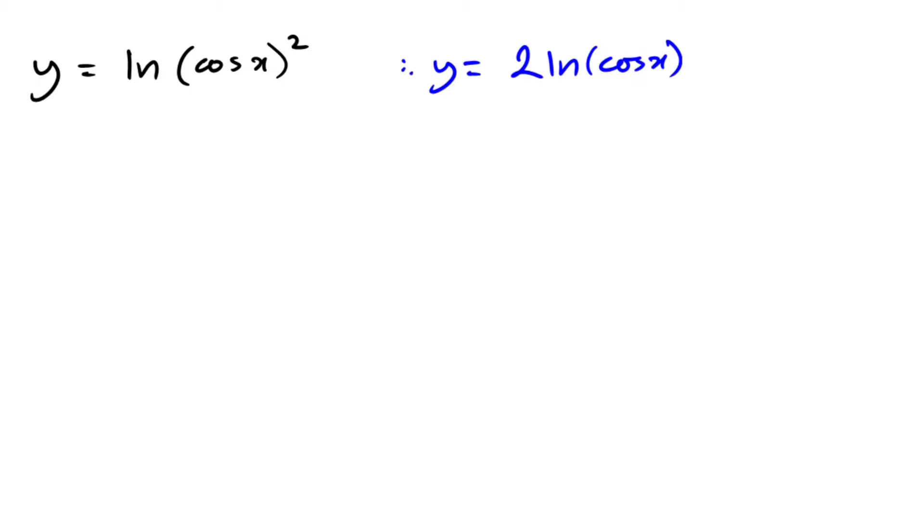Now we're going to go ahead and apply the chain rule to differentiate. Every time you've got something in a bracket like cos x, we're going to always let that be u. So we say, okay, let u equal cos x.